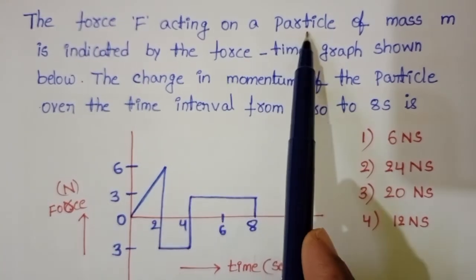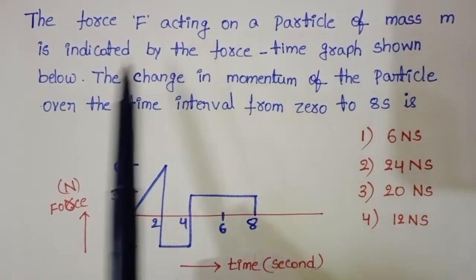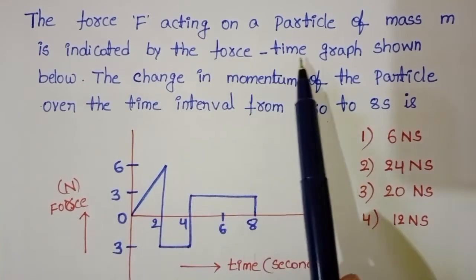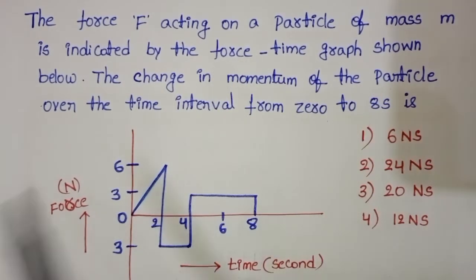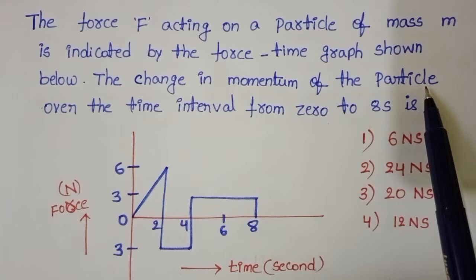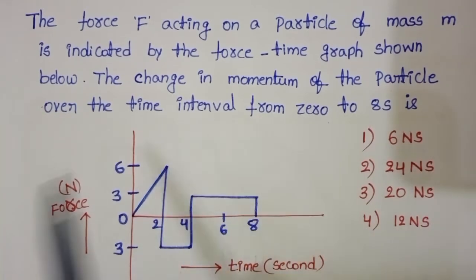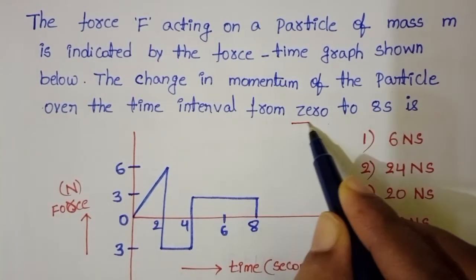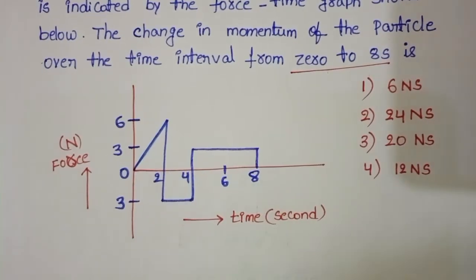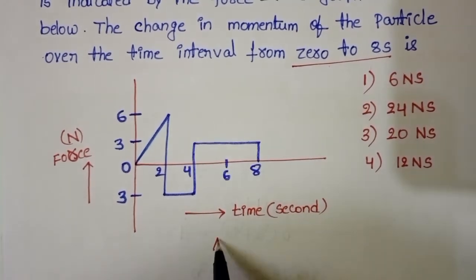The force F acting on a particle of mass M is indicated by the force-time graph shown in the figure. The change in momentum of the particle over the time interval from 0 to 8 seconds is given. This is a force-time graph. We have to find out the change in momentum.